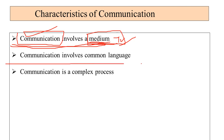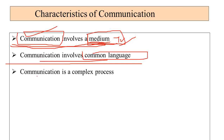Communication involves a common language. This means that when I talk with you, I will do it in the same language that you understand. If I start communicating in a language that you don't understand, then the communication will not be complete. So when two people interact, they use a common language — that is why communication involves a common language.